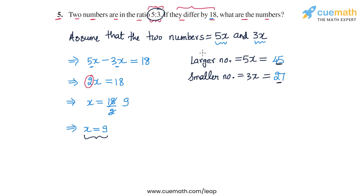And we can verify that this answer is correct. These two numbers differ by 18, which is what is given to us in the statement. And they also have a ratio of 5 is to 3. You can see that if you take the ratio 45 is to 27, in the simplest form it will be 5 is to 3. So the answer is the two numbers are 45 and 27. And that completes question 5.